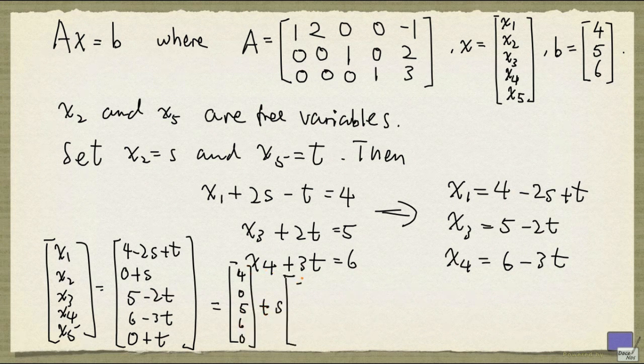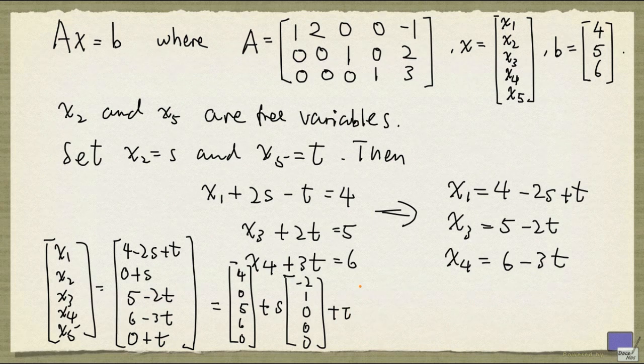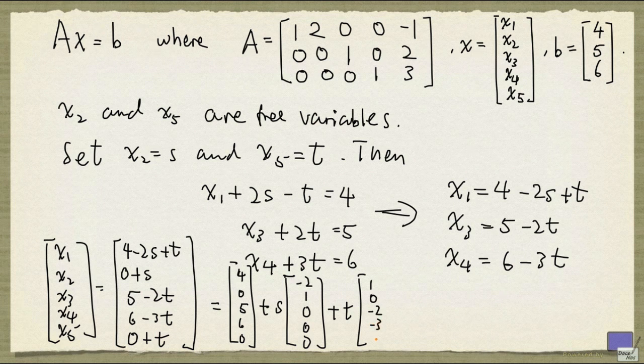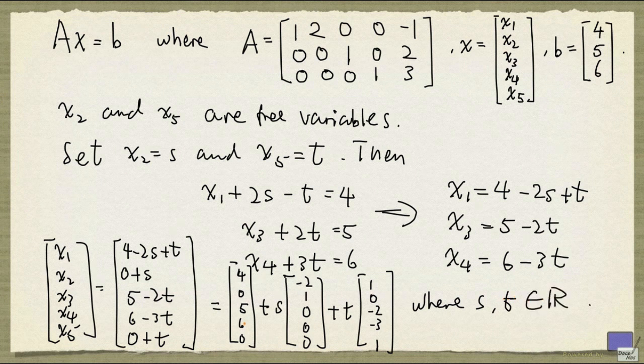plus s times minus 2, 1, 0, 0, 0, plus t times 1, 0, minus 2, minus 3, and 1. So the set of all solutions is going to be given by this. So here, s and t can be any real numbers. And that's a succinct description of all the solutions.